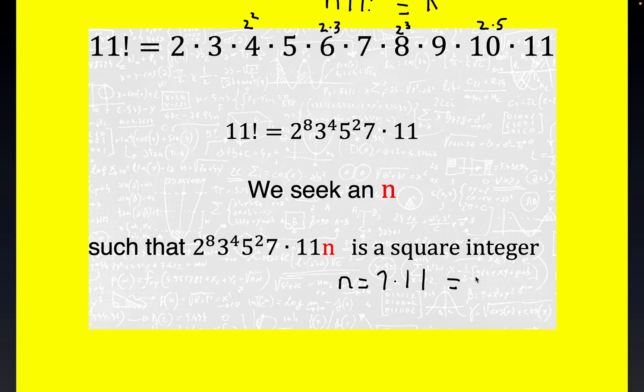But then what happens, you would get this would be equal to two to the eighth times three to the fourth times five squared, and then times seven squared times eleven squared.